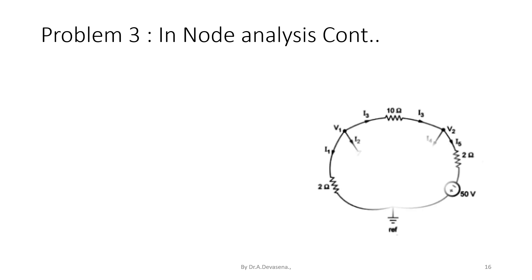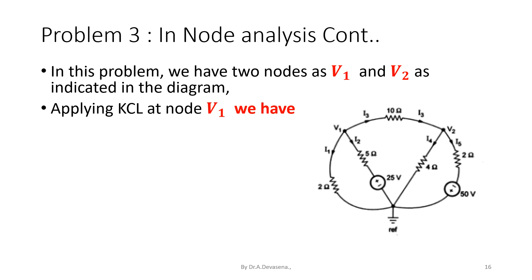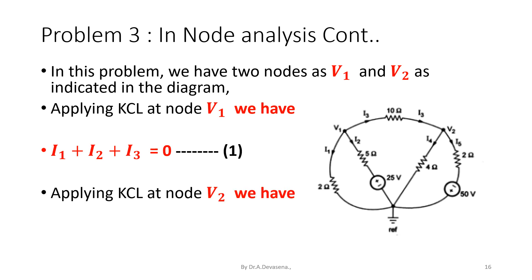In this problem, we have two nodes V1 and V2. Applying KCL at node V1, the currents I1, I2, and I3 are all leaving. Therefore, I1 plus I2 plus I3 is equal to 0. Consider this as equation 1. Now consider node V2. Applying KCL at node V2, the current I3 is entering but the currents I4 and I5 are leaving. Therefore, I3 minus I4 minus I5 is equal to 0. Consider this as equation 2.